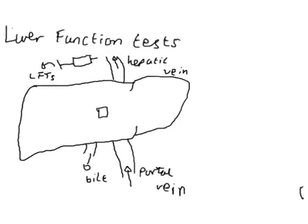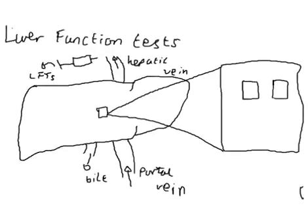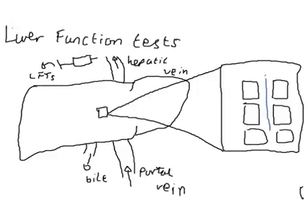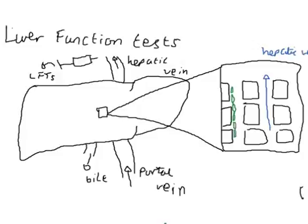Taking a closer look, the blood flows in through the portal vein and along sinusoids, which are lined by hepatocytes, coming out the other end into the hepatic vein. Sitting on the other side of the hepatocytes are the bile canaliculi, which are lined by their own special epithelial cells. The bile is produced into these canaliculi, which then flows in the opposite direction to blood.